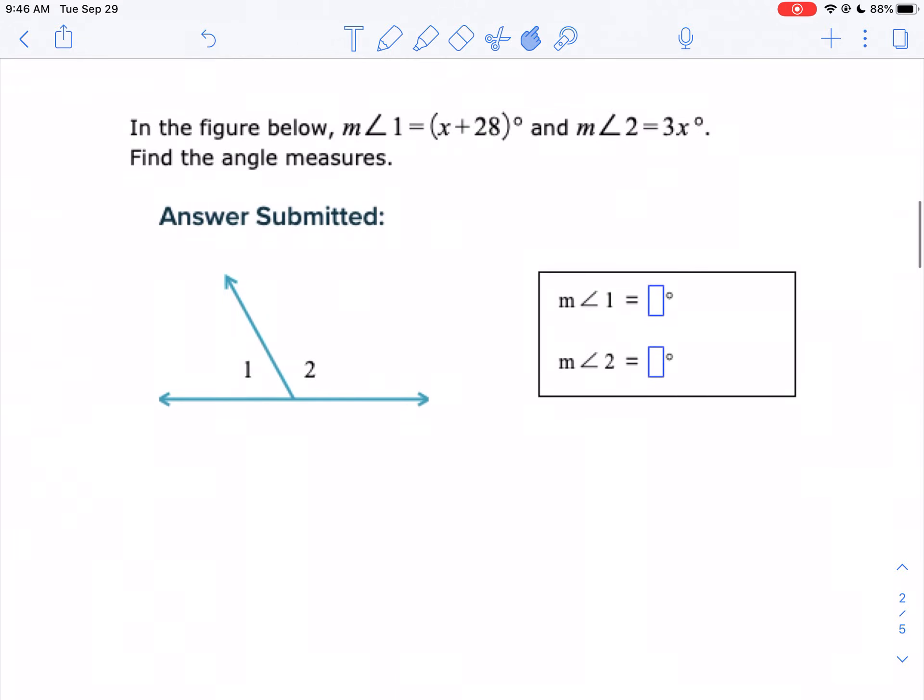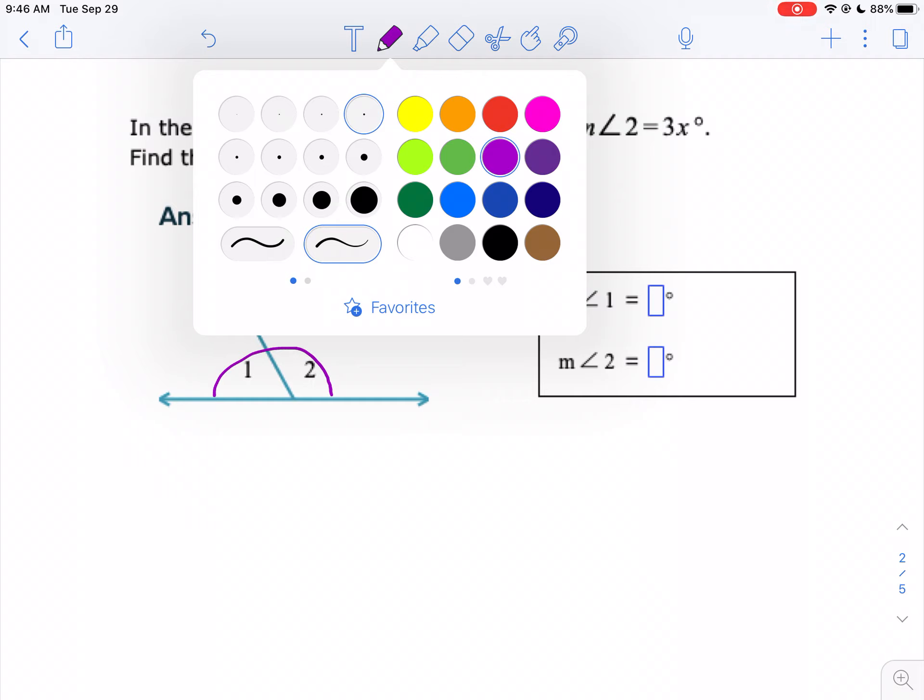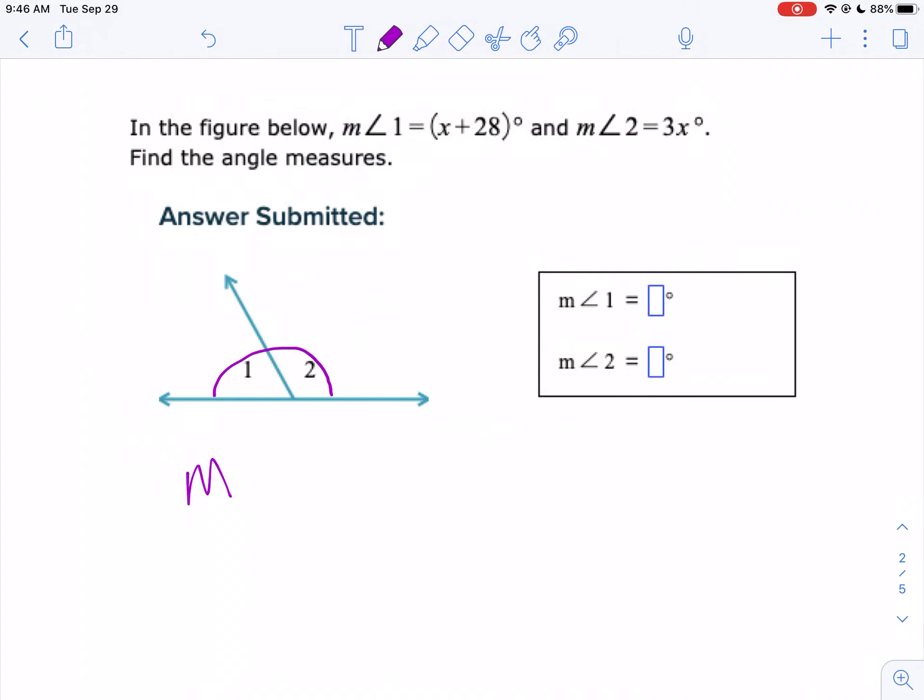Let's take a look at another question here. In the figure below, angle 1 is X plus 28, and angle 2 is 3X. Find the measure of the angles. The one thing you have to notice, if you add these two up, it's a straight line, which is 180 degrees. So in other words, the measure of angle 1 plus the measure of angle 2 equals 180 degrees. I'm going to label angle 1 is X plus 28, and angle 2 is 3X. So we're going to say X plus 28 plus 3X equals 180 degrees.